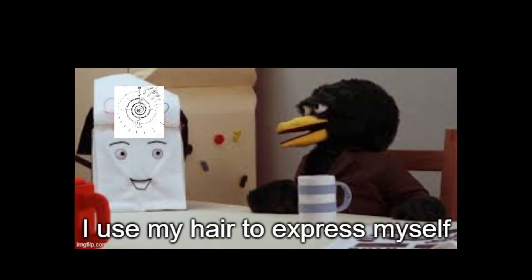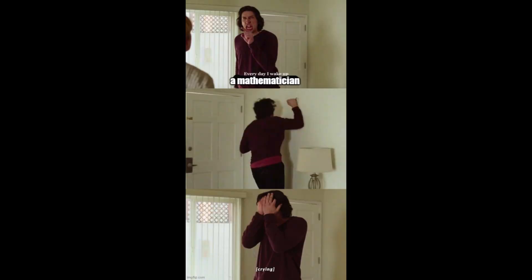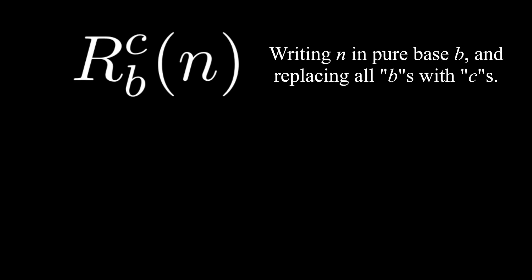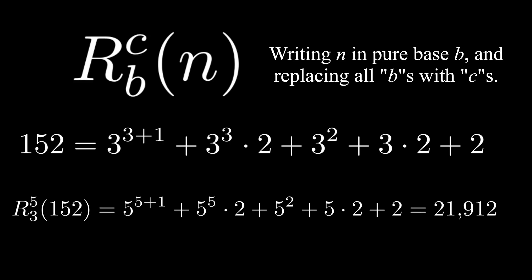And we can prove this by appealing to the expressive strength of... infinities. As any good math person would, let's establish a bit of notation first. Given some number n, let R_BC denote the number obtained by writing this number in pure base B, and then replacing every B with a C. For example, since 152 is equal to 3 to the power of (3 plus 1 plus 3 cubed) times 2 plus 3 squared plus 3 times 2 plus 2, if we replace all the 3s with 5s, we find that R_35 of 152 is 21,912.